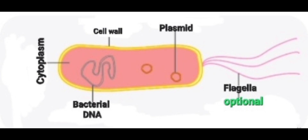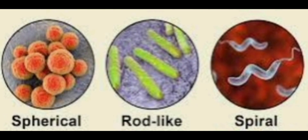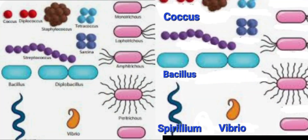Bacteria are amongst the smallest living organisms present on earth. Shape-wise, bacteria can usually be divided into four types: the spherical-shaped bacteria called cocci, the rod-shaped bacteria named as bacilli, the helical and twisted bacteria named spirillum, and the comma-shaped bacteria named as vibrio.